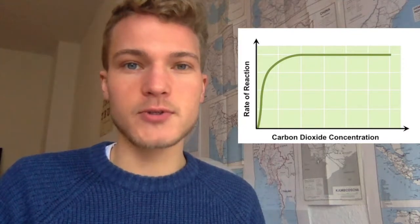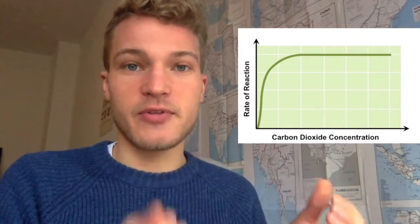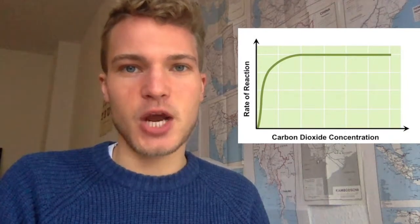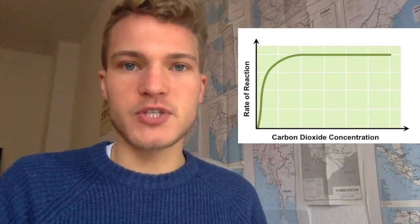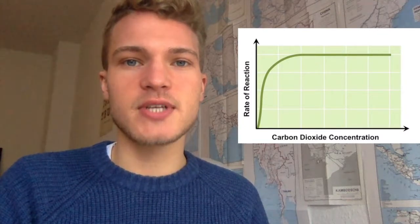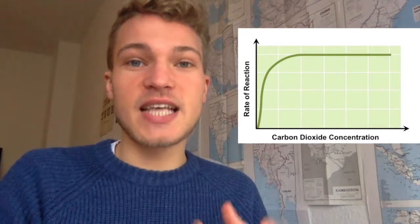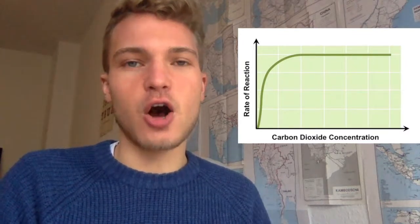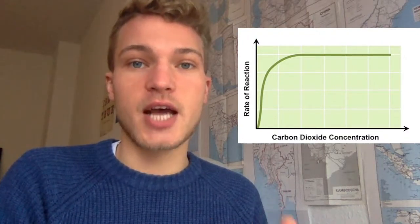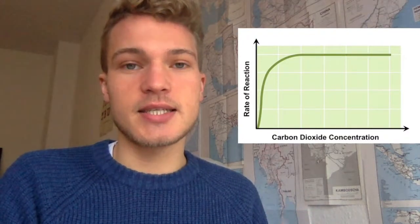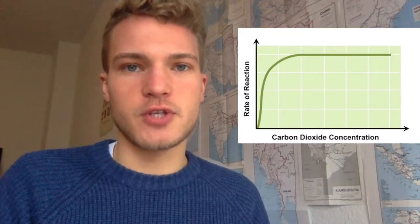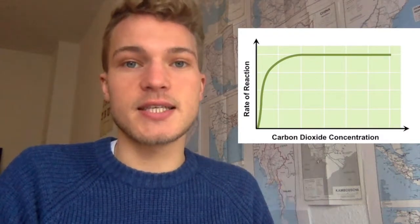The same graph shape — increase then plateau — applies to CO₂ concentration. Carbon dioxide is used in carbon fixation to create organic compounds. If more CO₂ is available for the plant to take in and fixate, the rate of photosynthesis increases. But again, at some point all the enzymes working on carbon fixation become saturated — just like chlorophyll saturates at a certain light intensity. Even if we increase CO₂ concentration beyond that point, we cannot increase the rate of photosynthesis, as we have reached saturation.